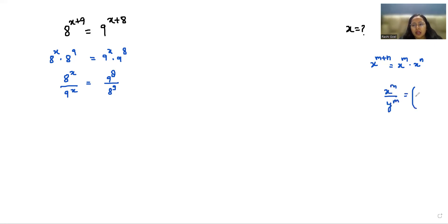I can write x by y whole power m. So left hand side: 8 by 9 whole power x equals 9 power 8 by 8 power 9. Now I'm taking log on both sides.